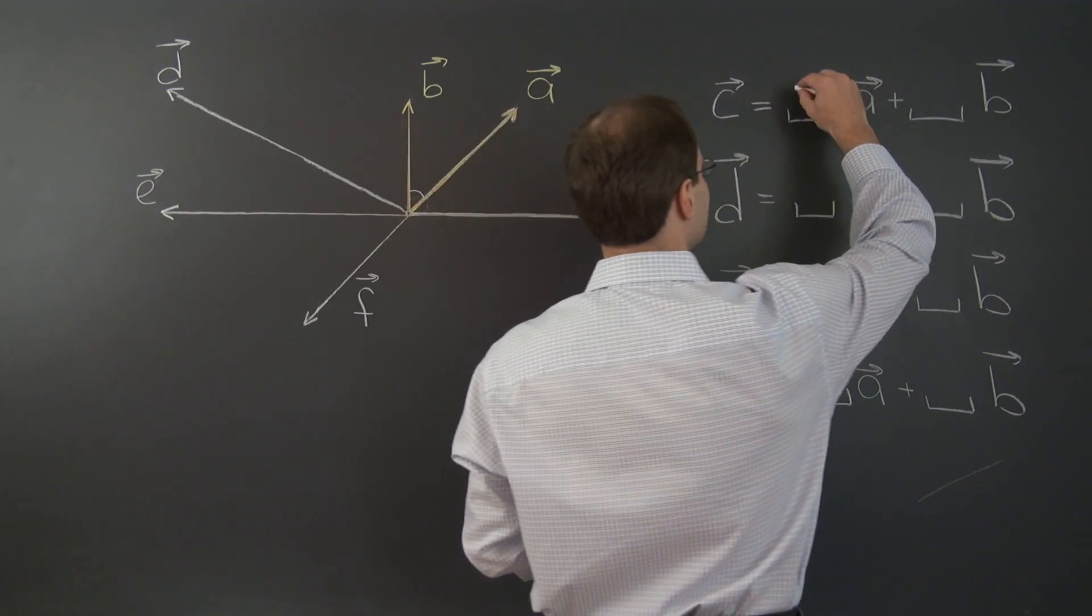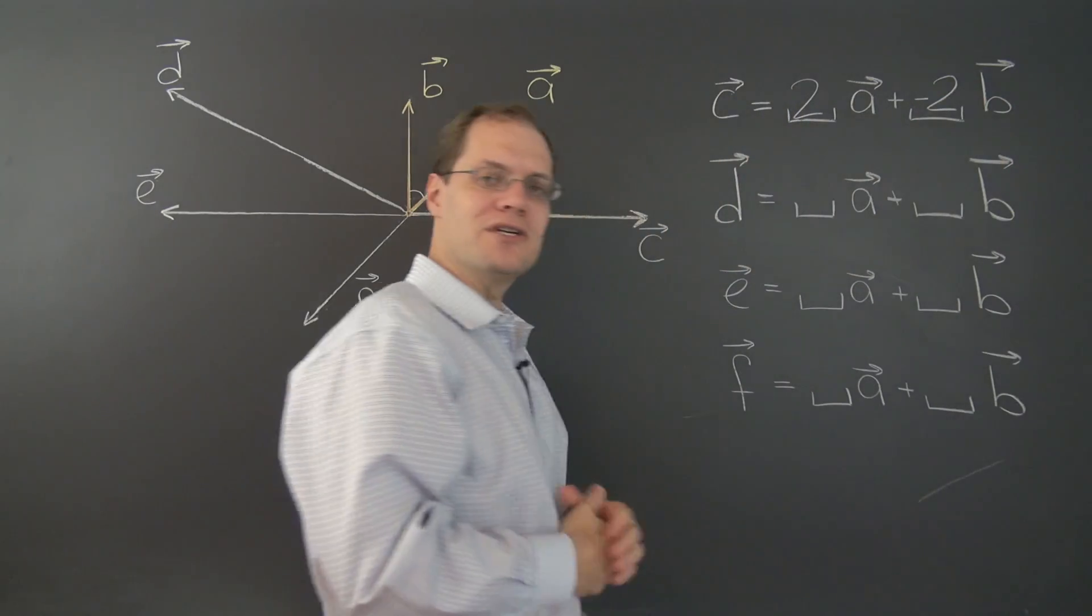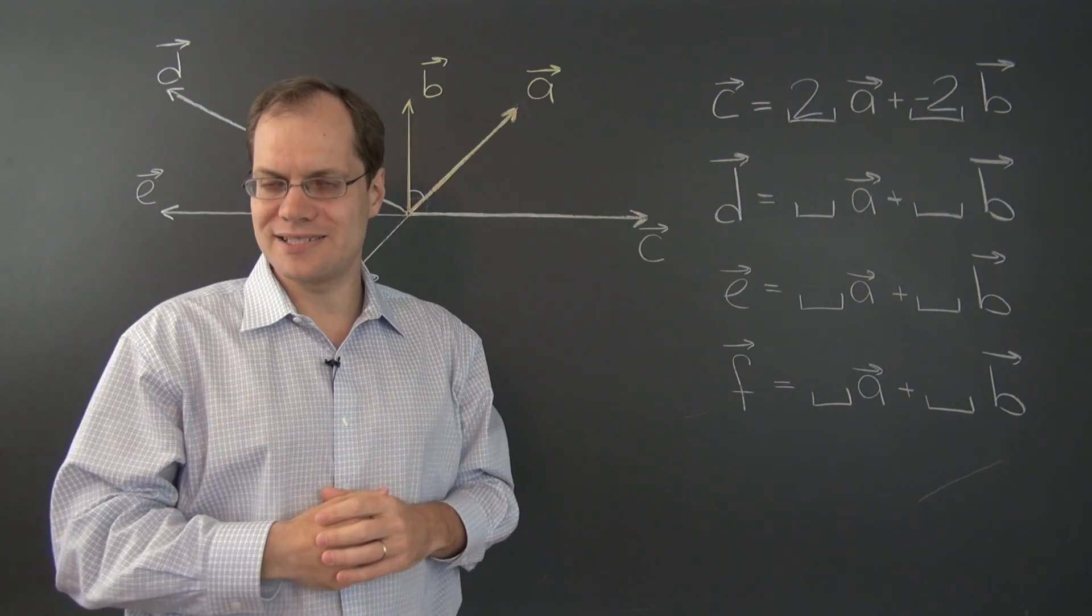And since we can multiply expressions like that out by distributivity, the result is 2a minus 2b. So here's the linear combination: 2a minus 2b.